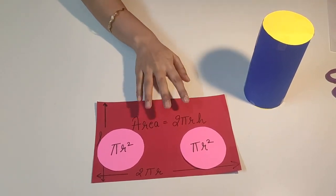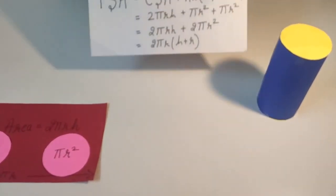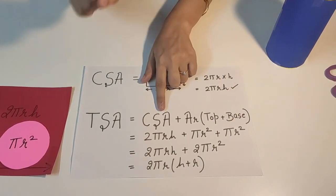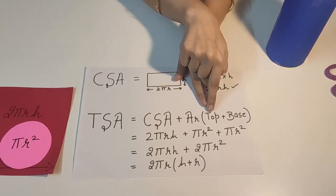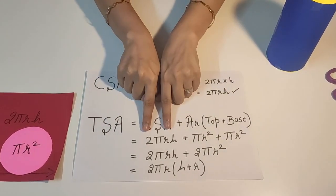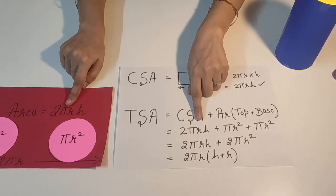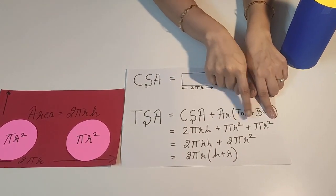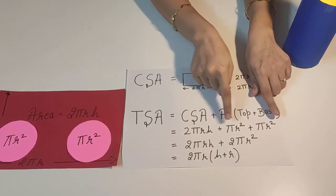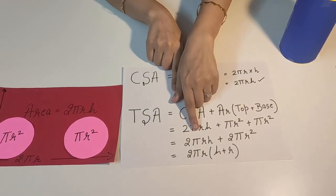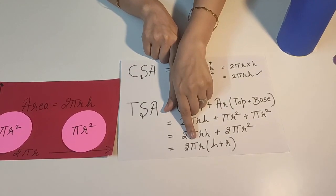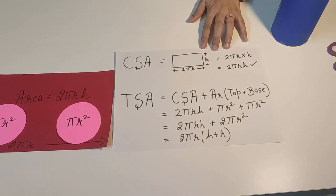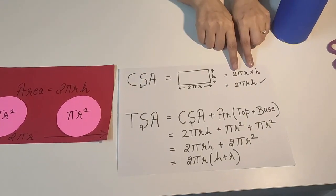If I add these three areas, I will get the total surface area of this cylinder. So we conclude that the total surface area of the cylinder equals the curved surface area plus the area of the top and base. Curved surface area is 2πrh, and the circular bases give πr² + πr². Since r is the radius, it does not change. Simplifying: 2πrh + 2πr². Taking 2πr common, I get 2πr(h + r). So this becomes the total surface area of the cylinder, and the curved surface area is 2πrh.